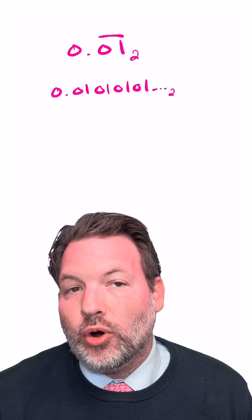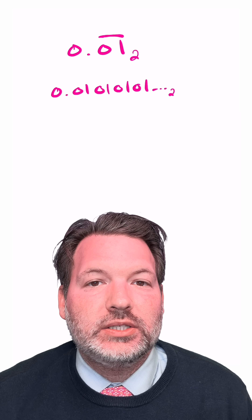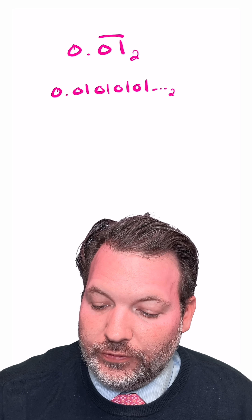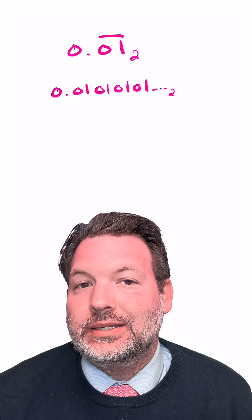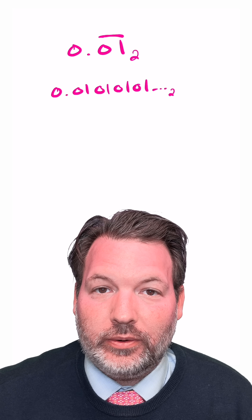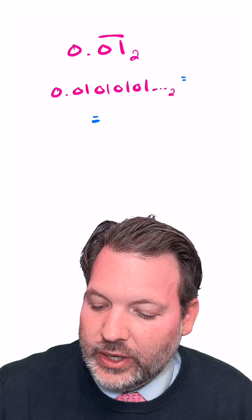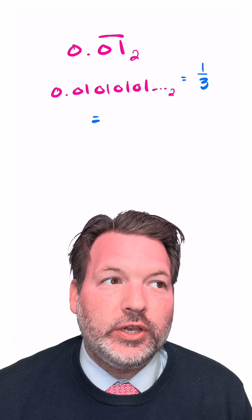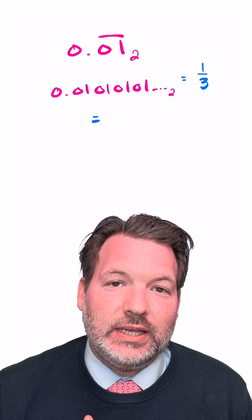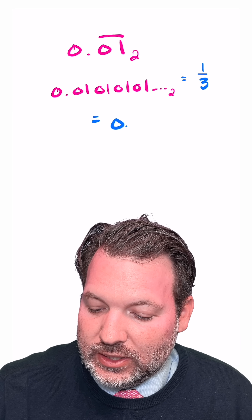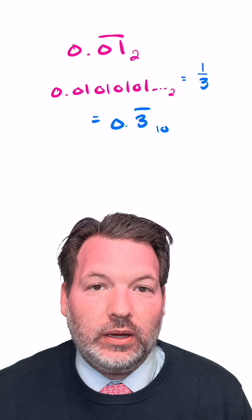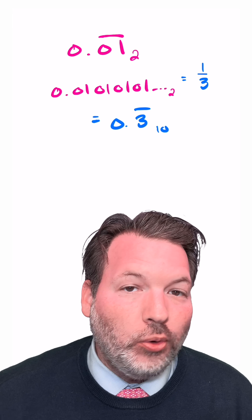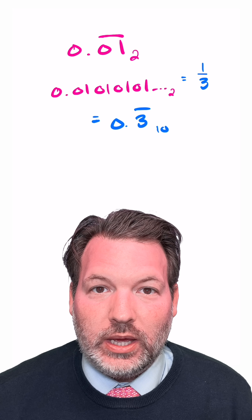That is a normal number in base 2, but it's not absolutely normal — it's not normal in other bases. For example, it's not normal in base 10. This number is actually the same thing as the fraction 1/3, so when you express it as a decimal in our number system, it's the same thing as 0.3 repeating, which is definitely not normal because the only digit it ever uses is 3.